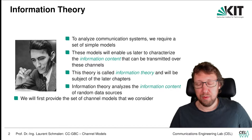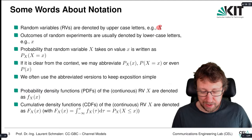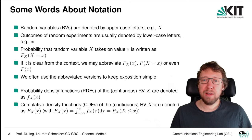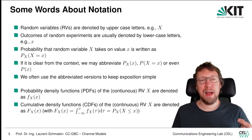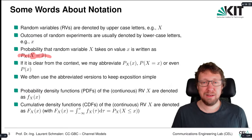We will first look at some of the channel models we consider, and give some applications later. The notation we're going to use: we will use uppercase letters to denote random variables. A random variable (RV) is denoted by an uppercase letter. Whenever we have a random experiment and the random variable gives an outcome, we use a lowercase letter.